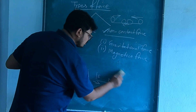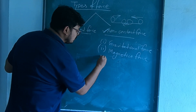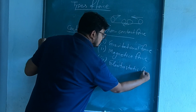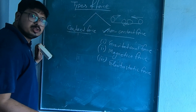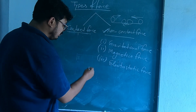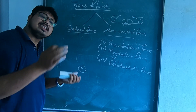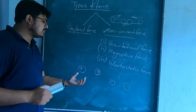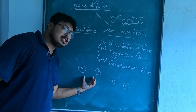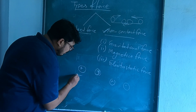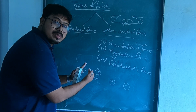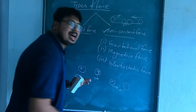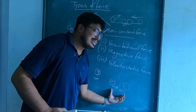Next is electrostatic force. Electrostatic force means the force between charges. There are positive charges and negative charges. Similar to magnetic force, like charges will repulse each other — that is repulsion between like charges — and there is attraction between unlike charges; those two unlike charges will attract each other.